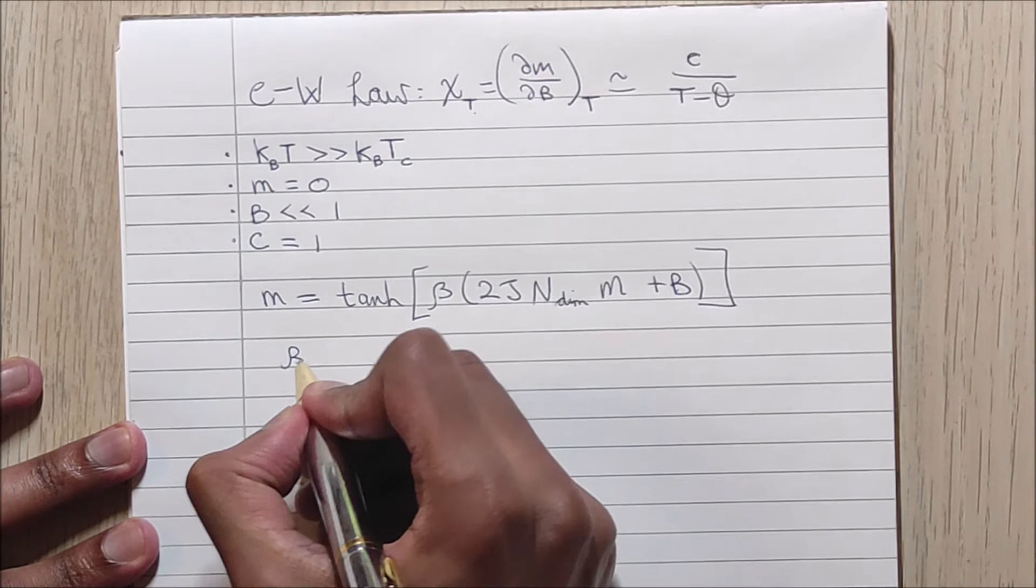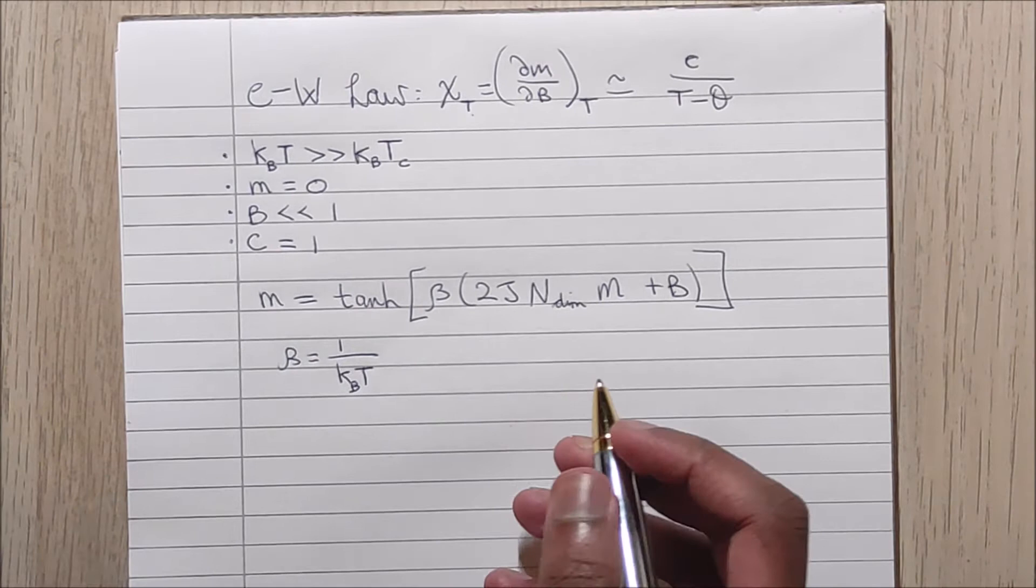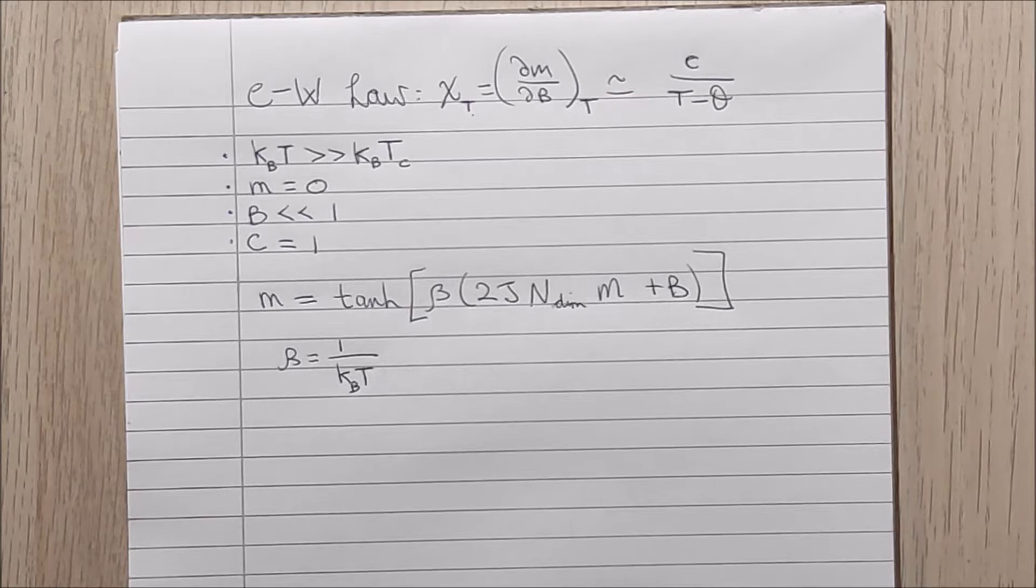Where beta is equal to one over the Boltzmann constant times temperature, J is the spin-spin interaction energy, and N subscript dim is the number of dimensions of the system.